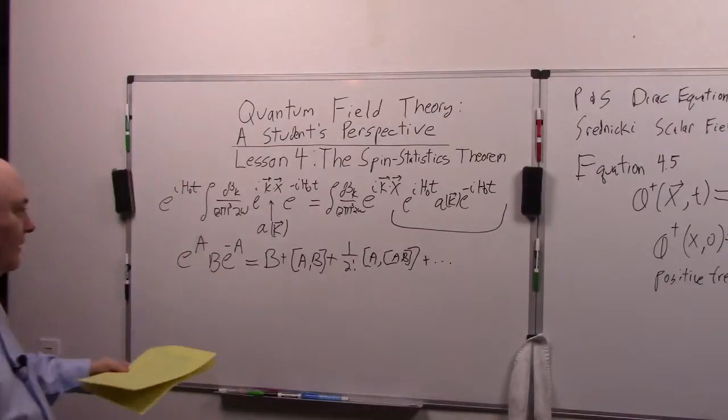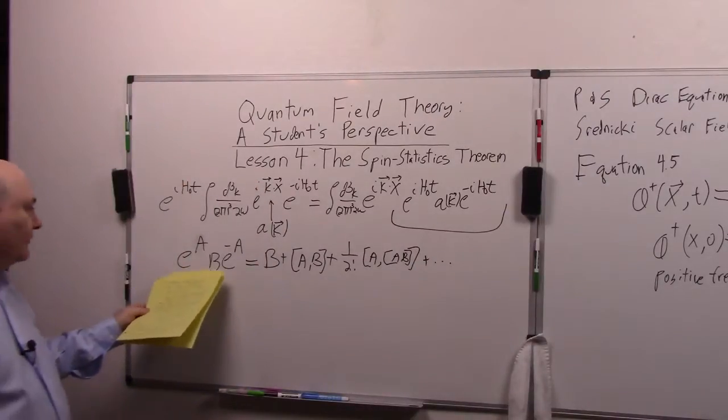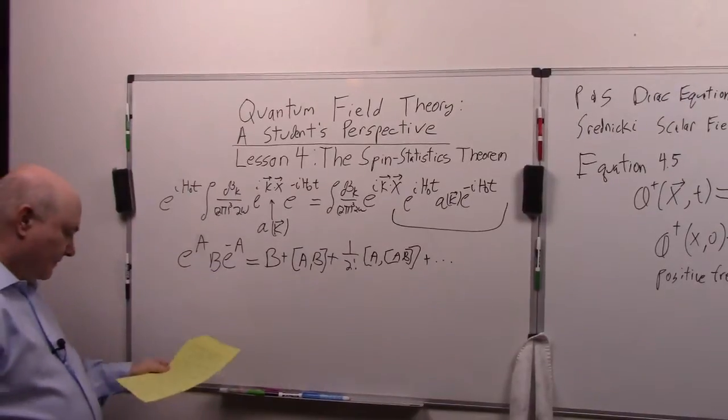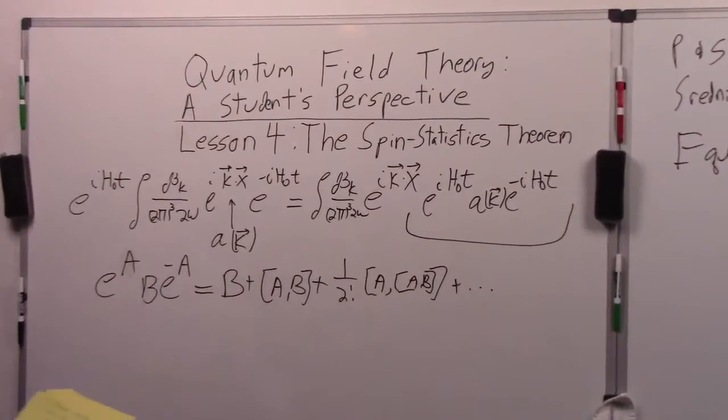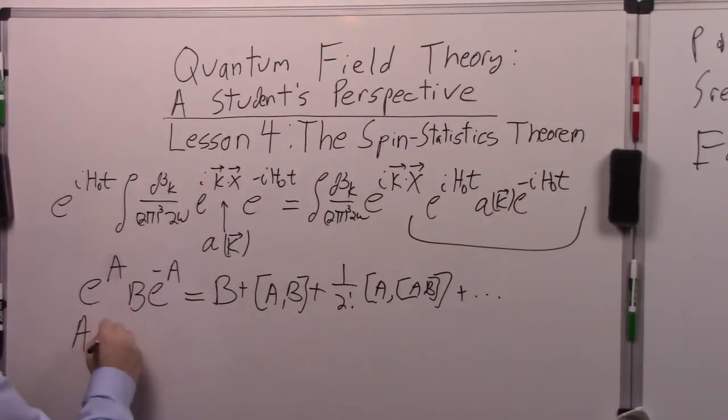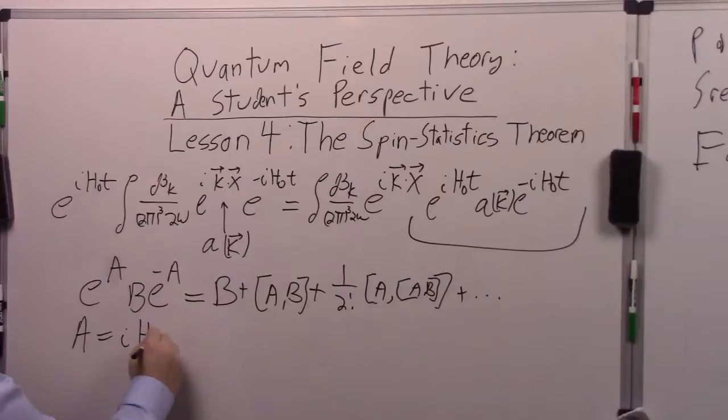So this is a general equation. There's no conditions on the operators A and B. So in our particular case we have A equal to IH∂T and B equal to A of K.